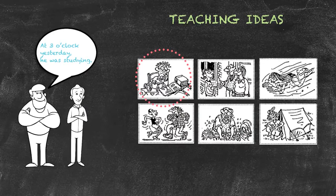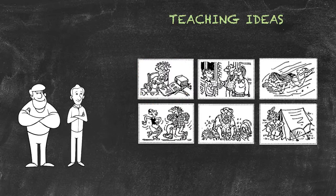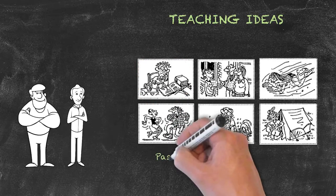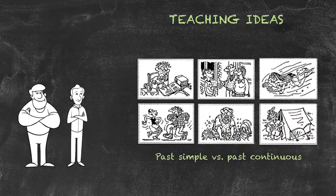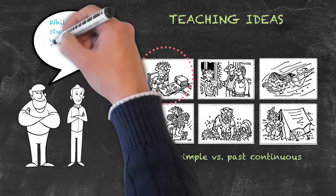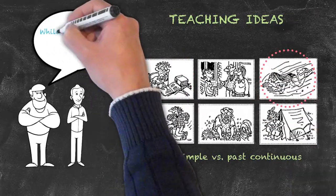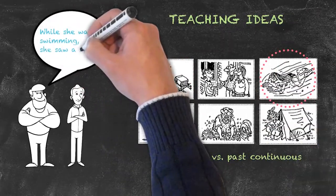Bear in mind, that the same activity can be used for different purposes. We could use the same activity we just saw, with students who are more comfortable with the past tenses and contrasting them. Here, we might compare and contrast the past simple to the past continuous. Again, we would cut up our cards, have our students turn the cards over at random, but now they'll make sentences such as, While I was studying yesterday, I received a phone call. While she was swimming, she saw a shark.